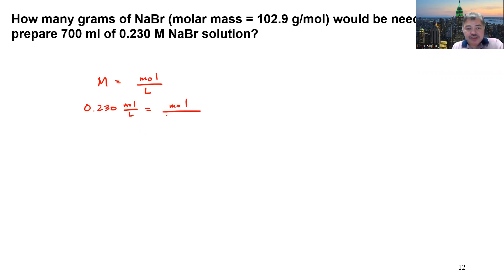You're given 700 ml over 1,000 ml per liter. So we can cancel this one. Cross multiplication here, 0.230 moles per liter times 0.7 liter will give you the number of moles.